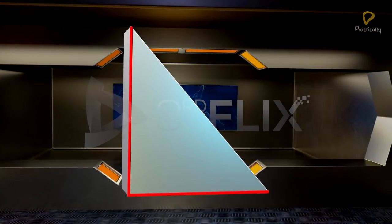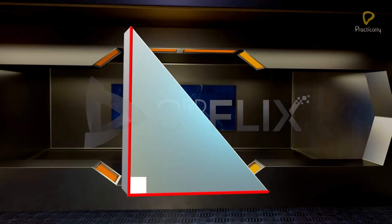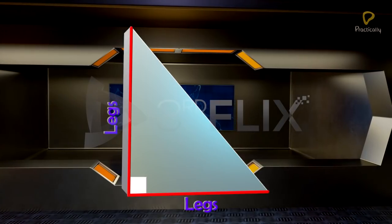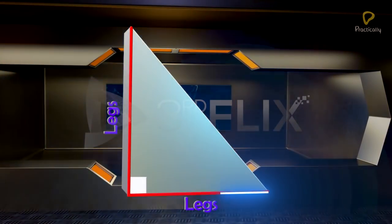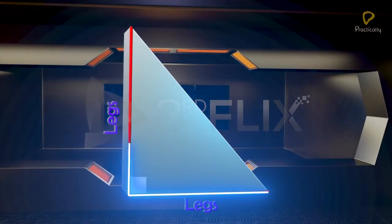The two sides that form the 90-degree angle are called the legs. These two sides are always the shortest two sides of the right triangle.